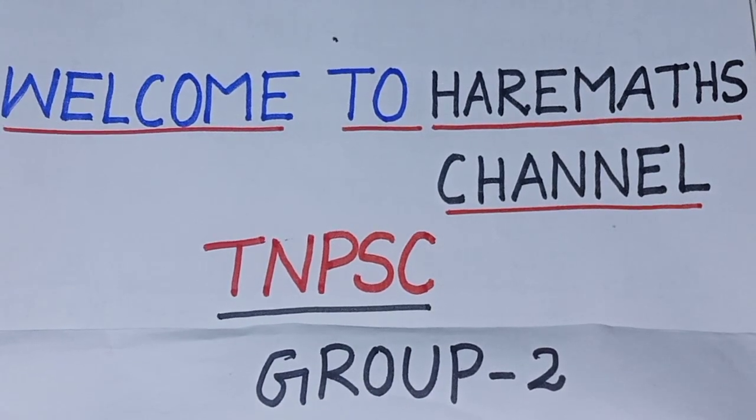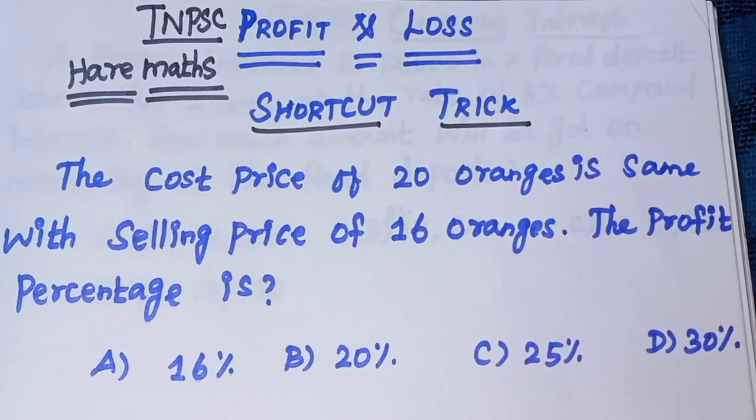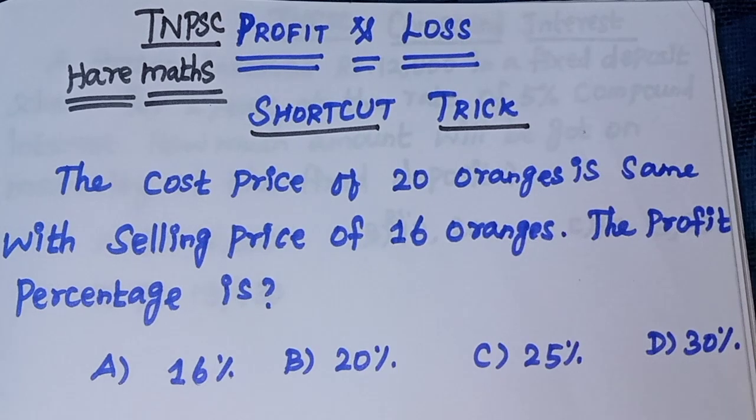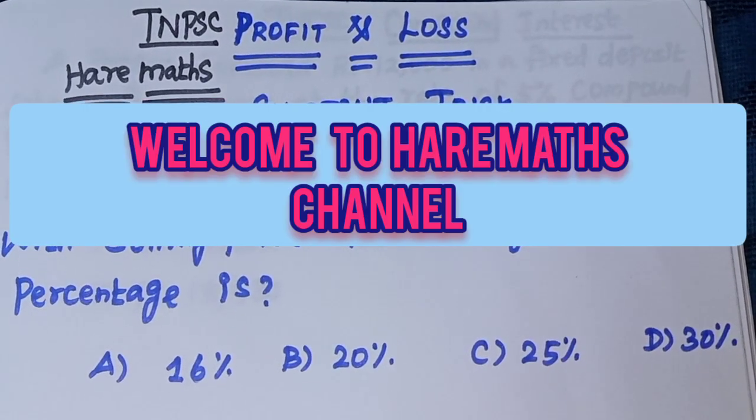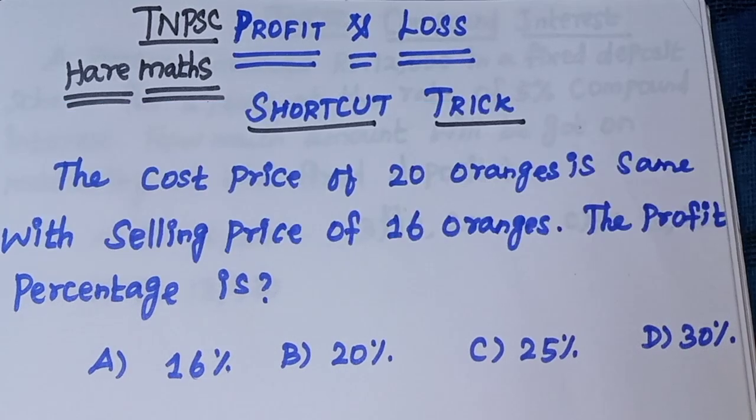Hello students, welcome to Hare Maths channel TNPSC. Today's topic is TNPSC profit and loss shortcut trick. The cost price of 20 oranges is the same as the selling price